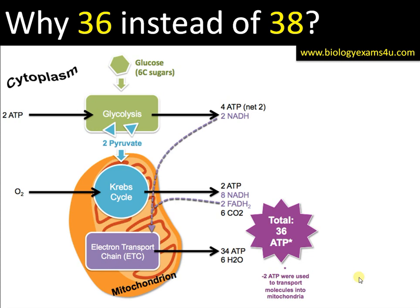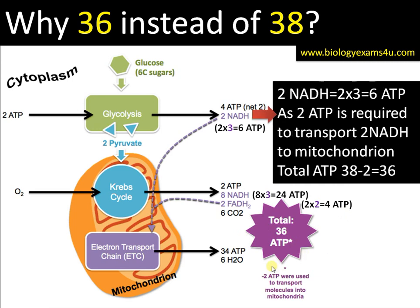Why is it 36 instead of 38? In glycolysis, 2 ATP and 2 NADH are produced. Using the old method, 2 NADH × 3 = 6 ATP. In the Krebs cycle: 2 ATP, 8 NADH × 3 = 24 ATP, and 2 FADH2 × 2 = 4 ATP, giving a total of 38 ATP. The reason some textbooks give 36 is that the 2 NADH synthesized in the cytoplasm during glycolysis must be transported into mitochondria, which costs 1 ATP per NADH — so 2 ATP are consumed, giving 38 − 2 = 36 ATP.